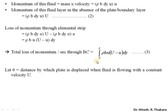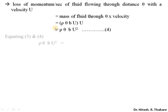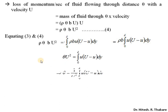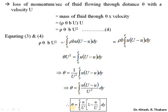Both quantities represent the total loss of momentum in the boundary layer, so they are equal to each other. Equating these expressions, we get rho·theta·b·U² = integral from zero to delta of rho·b·u·(U − u)·dy. Taking rho·b out of the integral, the rearrangement gives us the expression for momentum thickness: theta = integral from zero to delta of (u/U)·(1 − u/U)·dy.